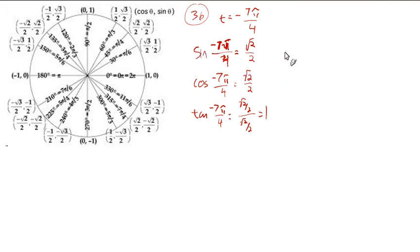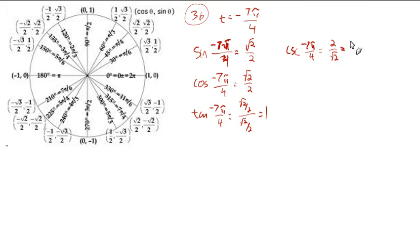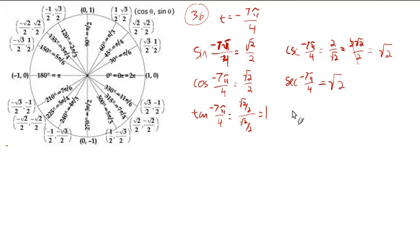The sine and cosecant have a reciprocal relationship. The cosecant of negative seven pi over four is one over root two over two, or two over root two. Rationalizing the denominator by multiplying by root two over root two gives two root two over two, and the twos cancel to give just the square root of two. The secant is also the square root of two by the same process. The cotangent is the reciprocal of the tangent, which is one over one, or one.